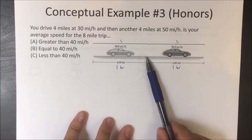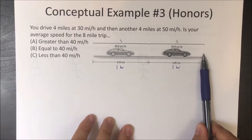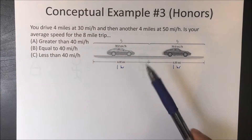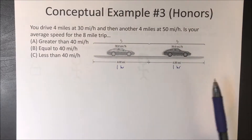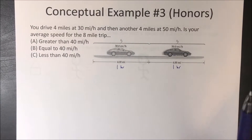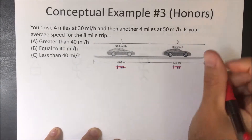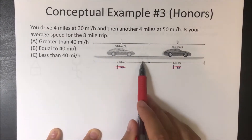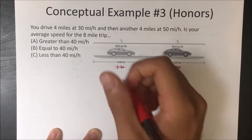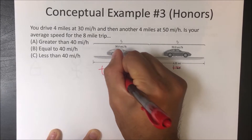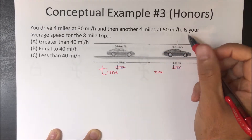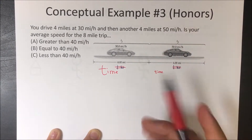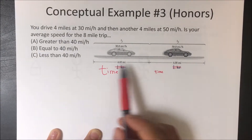They're going 30 miles an hour for a different amount of time than they're going 50 miles an hour. We want to think about how long the car is going 30 miles an hour and how long it's going 50 miles an hour. They're both going 4 miles, but since going 50 miles an hour gets you there quicker, the car spends a longer amount of time at 30 miles an hour and a shorter amount of time at 50 miles an hour.